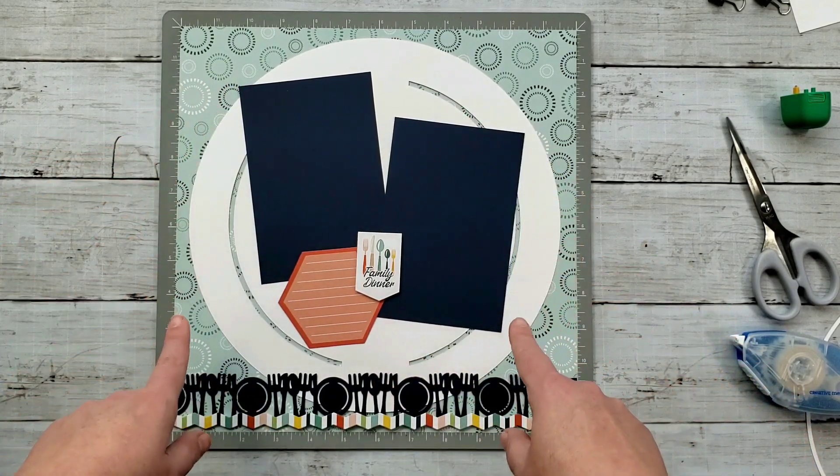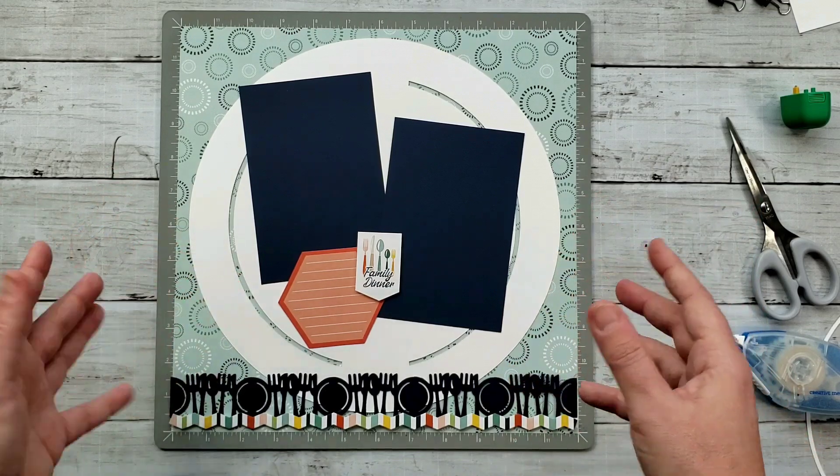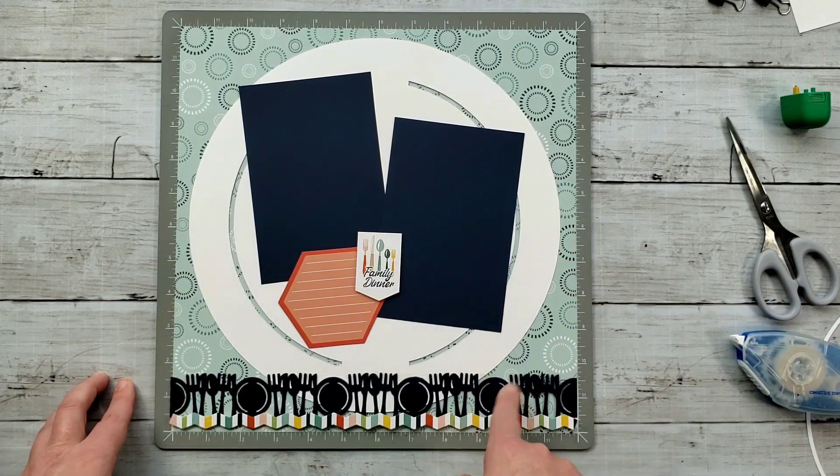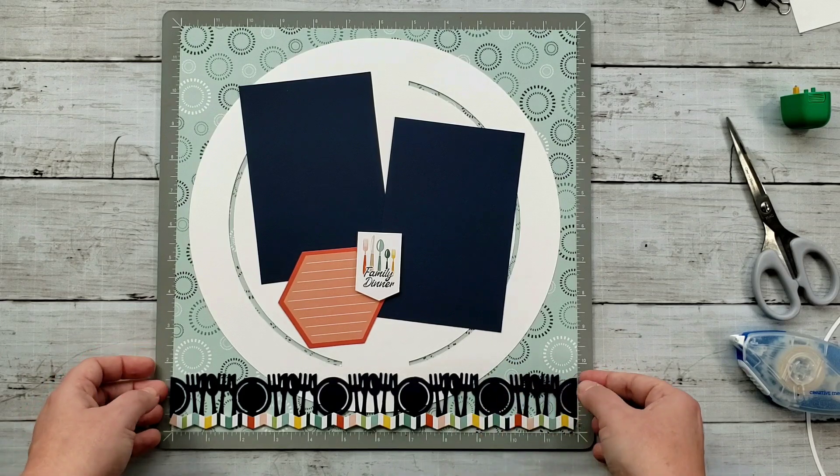So that's kind of fun. It just gives you that nice, simple, looks like a white dinner plate and it works great. It mimics the same design element down here in the Dine border punch.